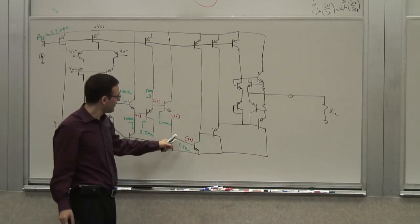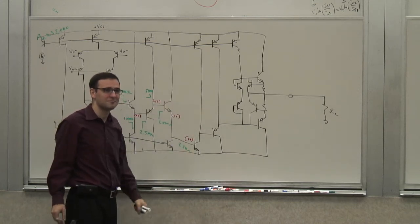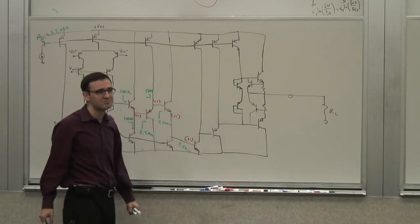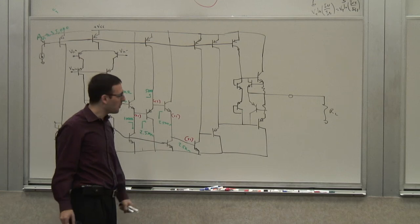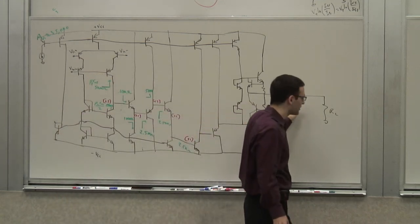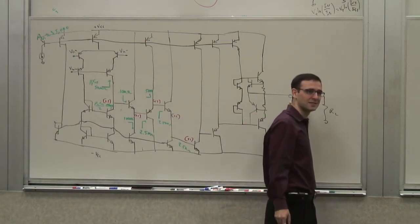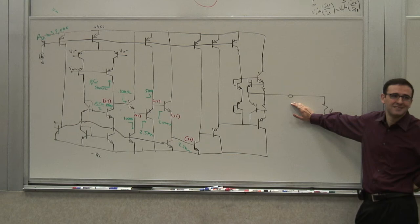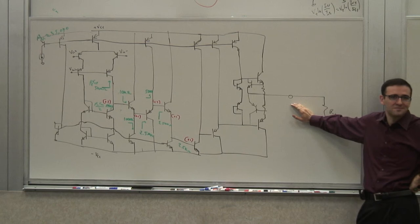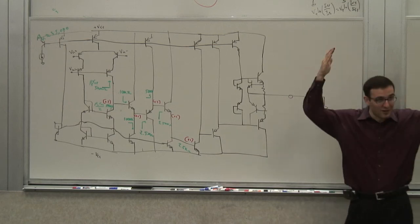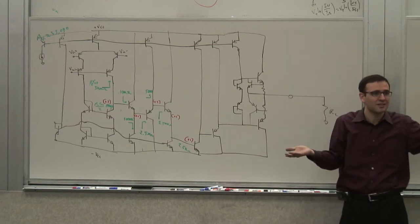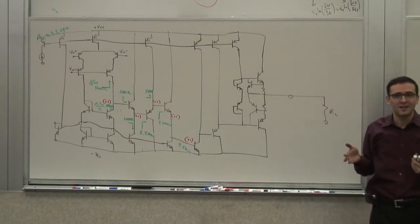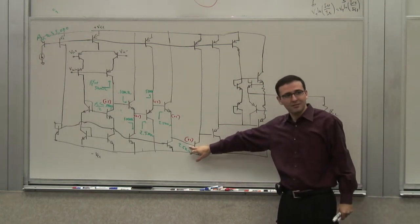Now let me ask you: what is the gain of this second stage from here to the output? About 1,000. So for this output voltage to move 1 millivolt, how much does this intermediate voltage need to move? 1 volt. What is the maximum range this voltage can move? For a VCC of 10 volts, it's not going to be more than 20 volts peak-to-peak. So that's going to be 20 millivolts change here at the most.